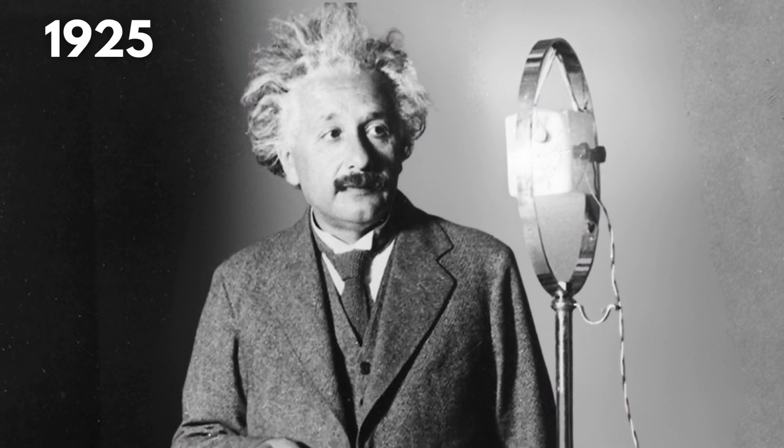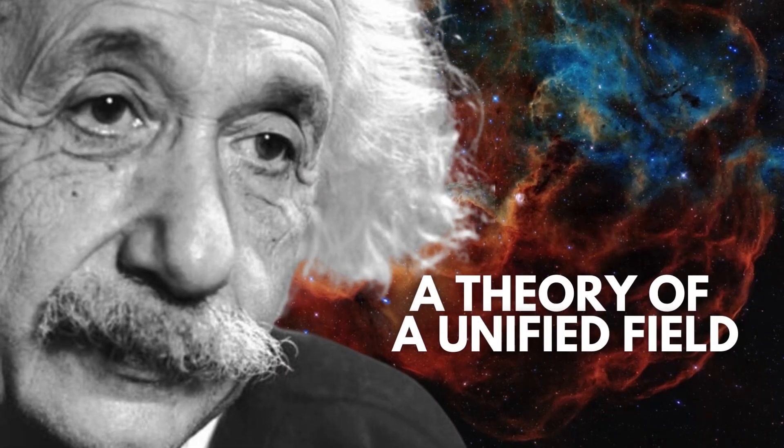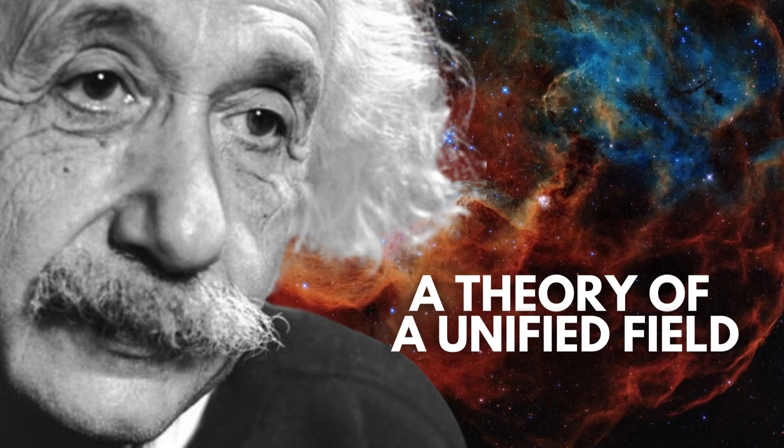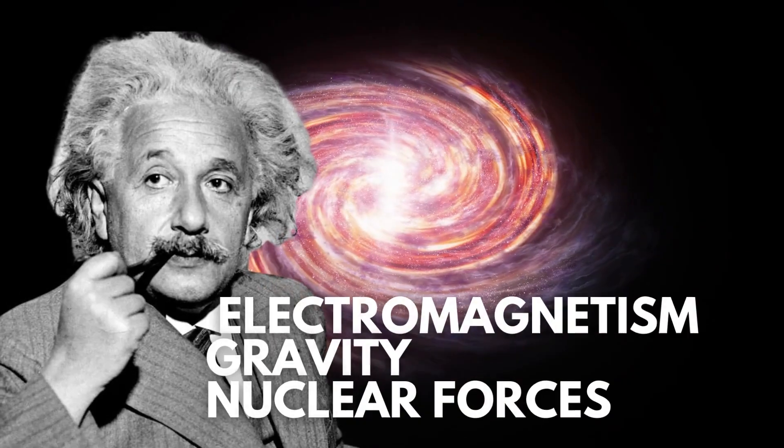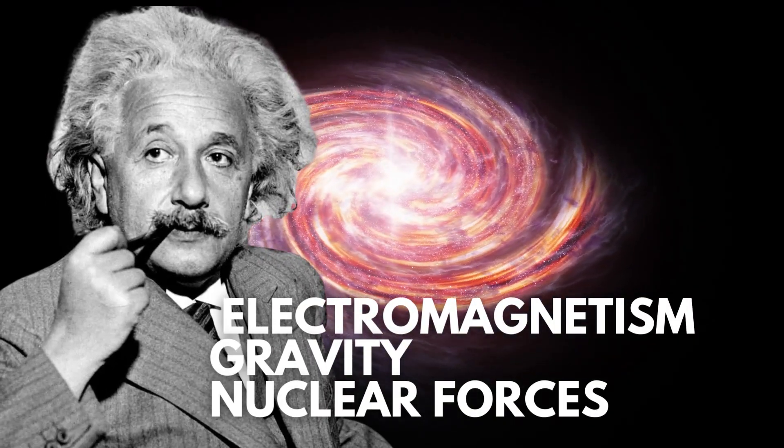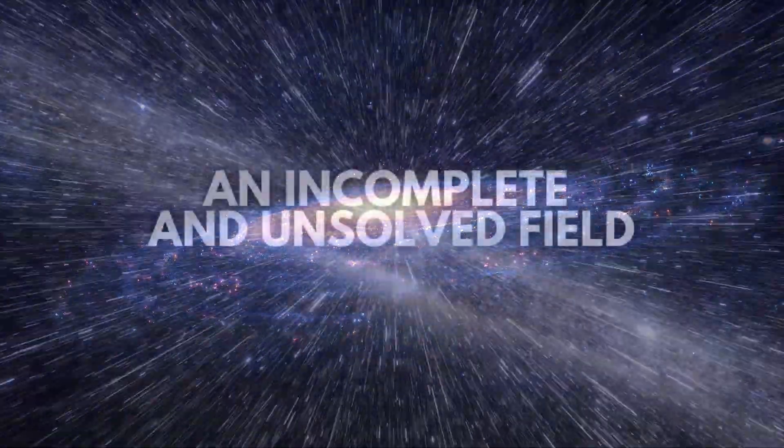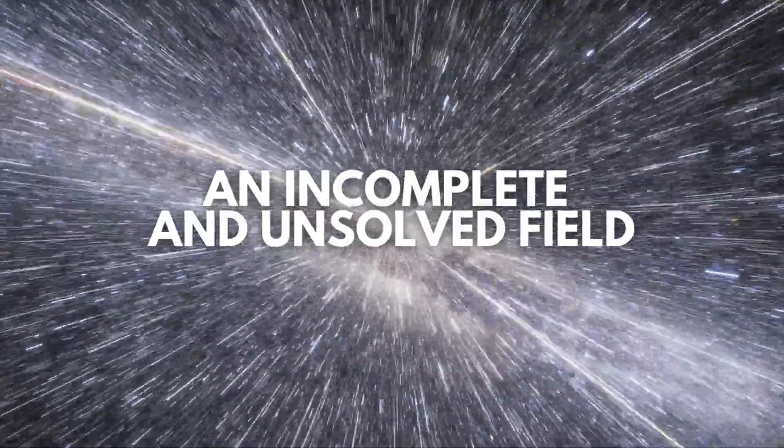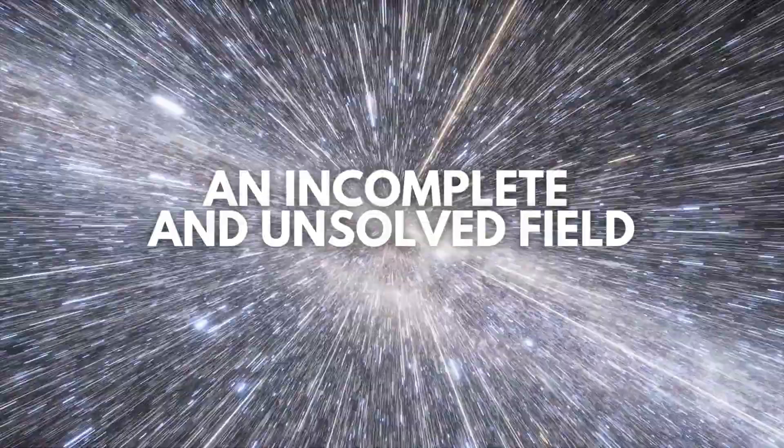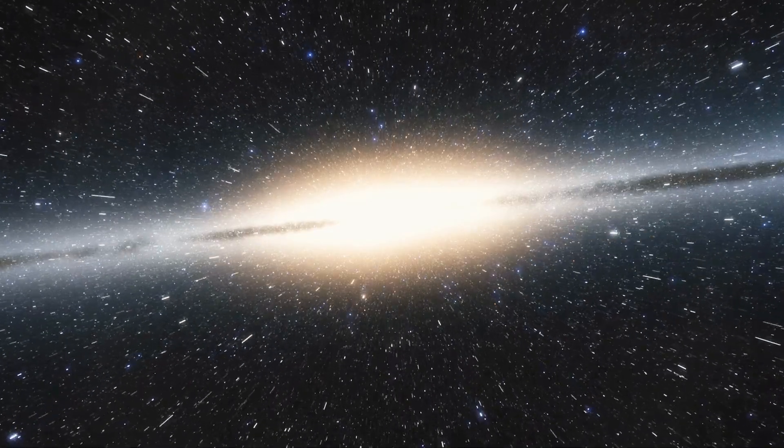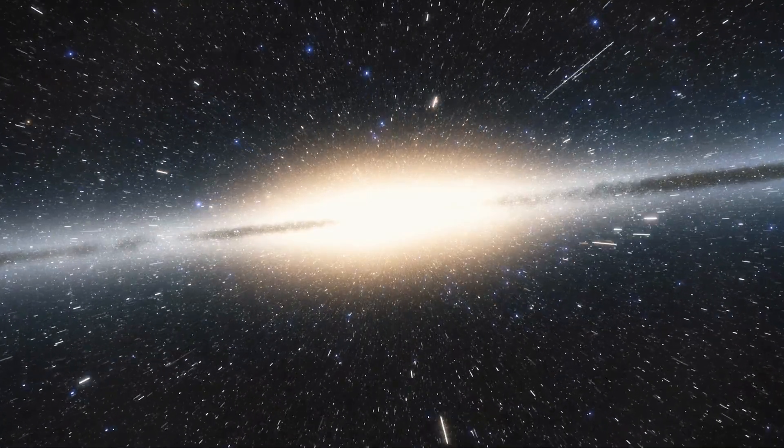In 1925, Einstein attempted to develop a theory of a unified field that would explain the combination of electromagnetism, gravity, and nuclear forces. However, this theory remained incomplete and was met with criticism from other scientists. Despite his efforts, new discoveries and mathematical challenges revealed the inadequacy of the unified field theory. Today, the theory of unified field remains an incomplete and unsolved field, unable to provide a consistent explanation that is compatible with the fundamental principles of modern physics.